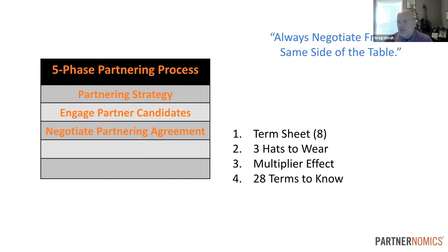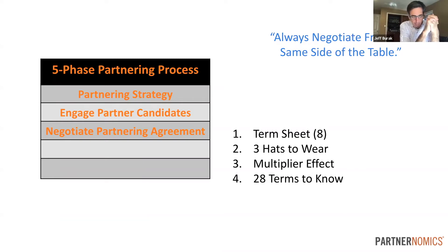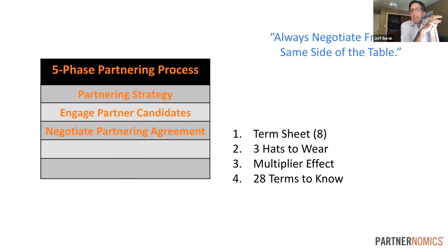The relationship being number one — how you work that relationship so you are top of mind and seen as additive to their organization's effort to sell your product, rather than just saying 'here you go, go get them.' That doesn't work unless you have the most perfect storm of alignment.